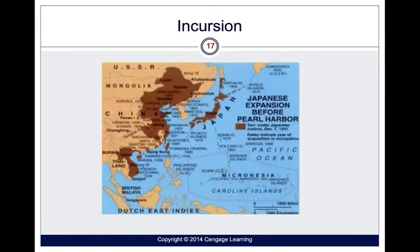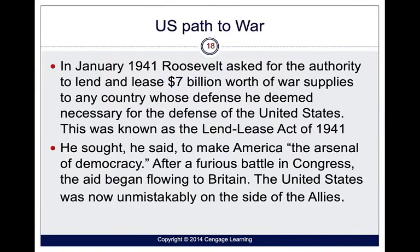Here is a map of Japanese expansion before Pearl Harbor. On the path to war in 1941, Roosevelt asked for $7 billion to lend and lease war supplies to any country whose defense was deemed necessary for the defense of the United States — the Lend-Lease Act of 1941. He wanted to make America the arsenal of democracy, and after a furious battle in Congress, aid finally began to flow to England.